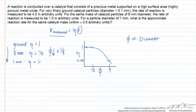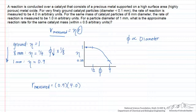Therefore, the rate we observe is equal to that effectiveness factor times the intrinsic rate of 4.0, and therefore we expect that the measured rate is roughly 3.6 in arbitrary units.